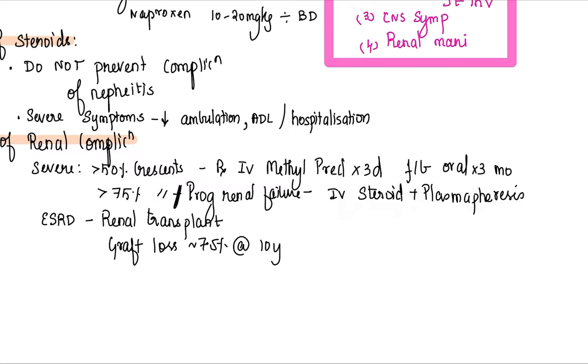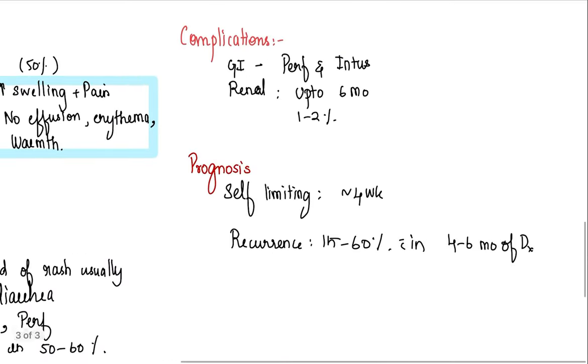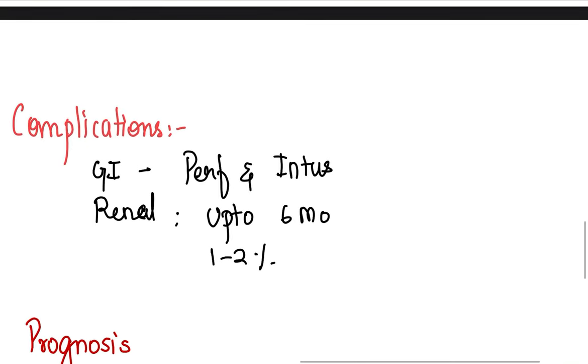If the patient is in end-stage renal failure, you do a renal transplant. Will there be redeposition of IgA immune complex? Yes, there will be redeposition. The graft failure is similar to any other renal transplantation. It's about 7.5 percent and on 10-year follow-up.